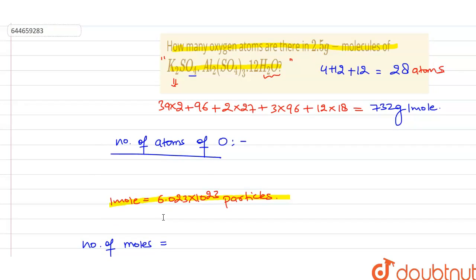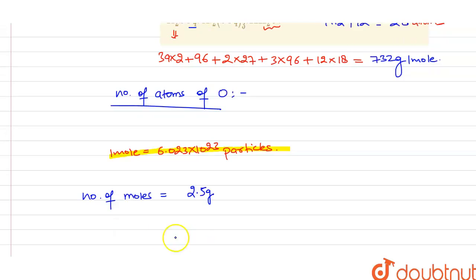So here we will write the given mass, and here we will write the molar mass, that is 732 gram per mole. So from this we can easily find the number of moles of the salt present in 2.5 grams. So it will be equal to 0.003415 moles of the salt.